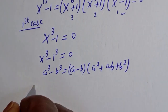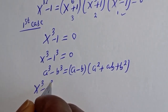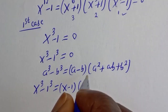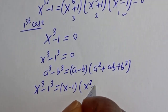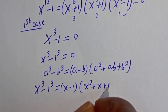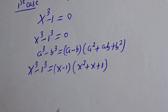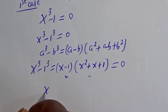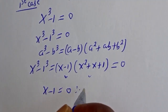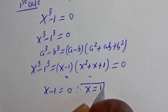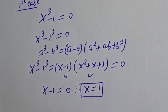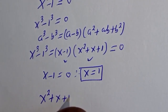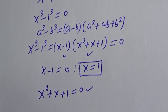Using the difference of cubes formula, a cubed minus b cubed equals a minus b, bracket, a squared plus ab plus b squared, so s cubed minus 1 cubed equals s minus 1, bracket, s squared plus s plus 1, equal to 0. From here we have two cases: the first case is s minus 1 is equal to 0, therefore s is equal to 1.